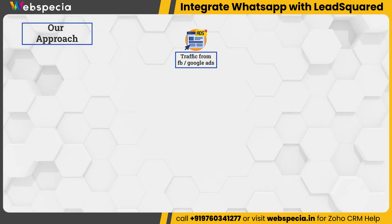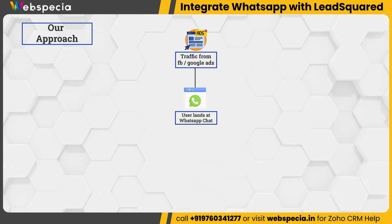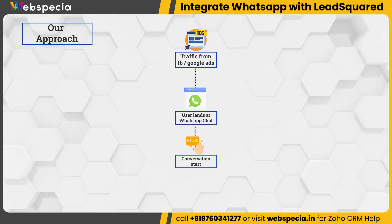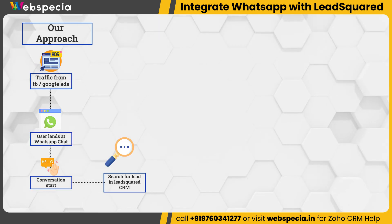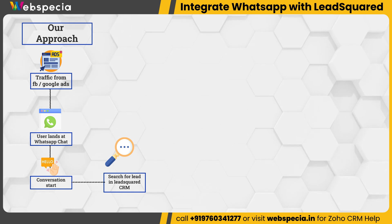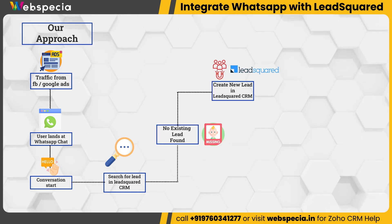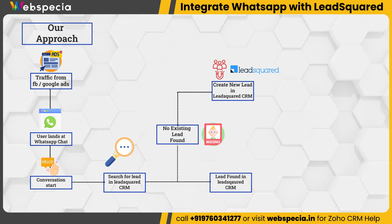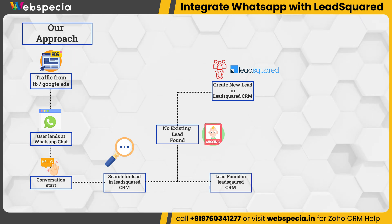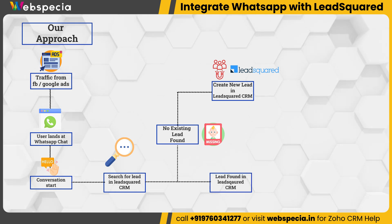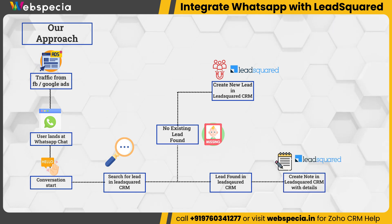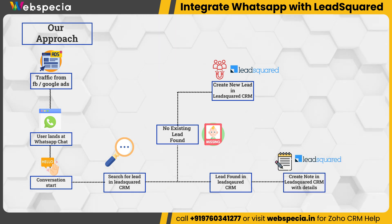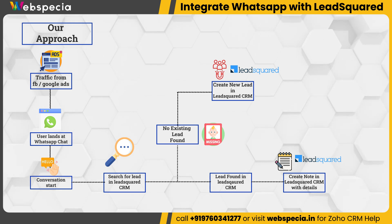A user comes from Facebook ads or Google ads and starts a conversation on WhatsApp. Once the conversation starts on WhatsApp, it will search for the lead in LeadSquared CRM. If there is no existing lead with that number, it will create a new lead. If there is an existing lead with that WhatsApp number, it will update the existing lead by creating a note in LeadSquared CRM.